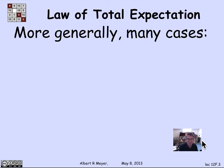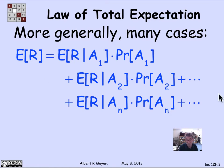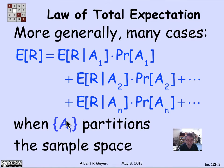Now of course it generalizes to many cases. The general form says that I can calculate the expectation of r by breaking it up into the case that a1 holds times the probability of a1, the case that a2 holds times the probability of a2, through an. This could very well — and typically is — an infinite sum, where the a_i's are a partition of the sample space. So they're all the different cases — either a1 or a2 or a3 — they're disjoint, and altogether they cover the entire set of possibilities.